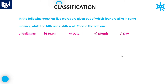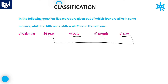Let's go to the next question. The first option is given as calendar, then year, date, month, and day. If you observe carefully — day, month, date, and year are all part of a calendar. So the odd one out, which is not similar to the remaining four options, is calendar itself.